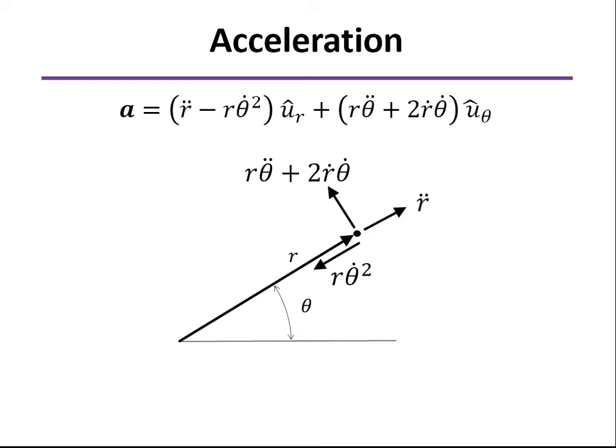But drawn on here, you can see that the r theta dot squared, which would be similar to the normal component of acceleration, is going to be inward. But since our unit vector r is outward, that's why you see the negative sign on that particular component.